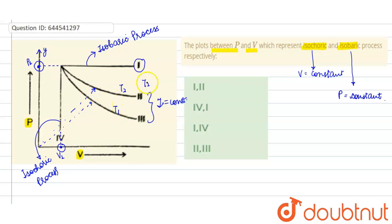So here they are not asking about isothermal process. They are asking isochoric and isobaric process. So isochoric process is represented by fourth curve and isobaric process is represented by first curve, while second and third